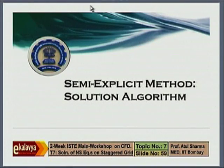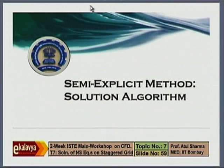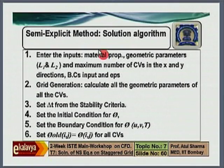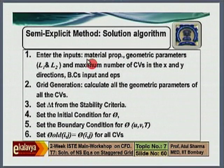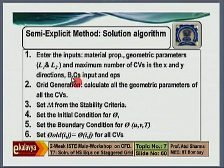So, after starting with the finite volume method, moving on to formulations for both semi-explicit and semi-implicit methods, then discussing the implementation details of the semi-explicit method with pseudo codes, finally let me discuss the solution algorithm. The solution algorithm for the semi-explicit method starts with user input, which is common to all solution algorithms: material properties, thermo-physical properties, geometrical parameters, maximum number of control volumes in x and y directions, the type of boundary conditions and the corresponding input values. This epsilon serves two purposes: convergence criteria for mass balance, and a steadiness criteria for steady state to stop computations.